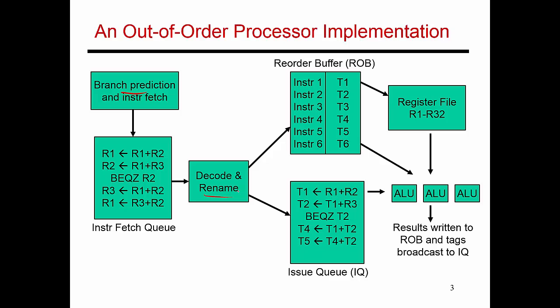So now let me explain what renaming does. The first instruction is going to get placed in reorder buffer entry number one. That has a temporary storage that corresponds to it, which is called T1. So I look at this instruction and say you're going to do R1 plus R2, so that's exactly what you do here. And then when you produce a result, instead of putting it in R1, I'm going to first put it in T1.